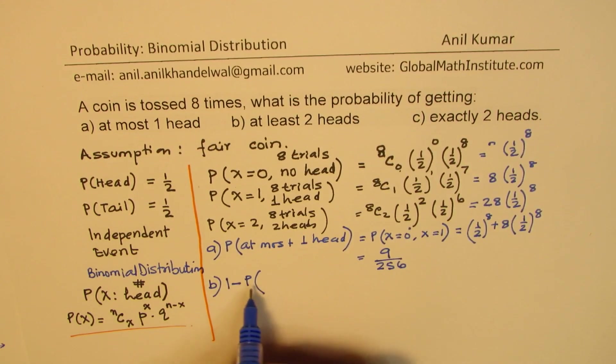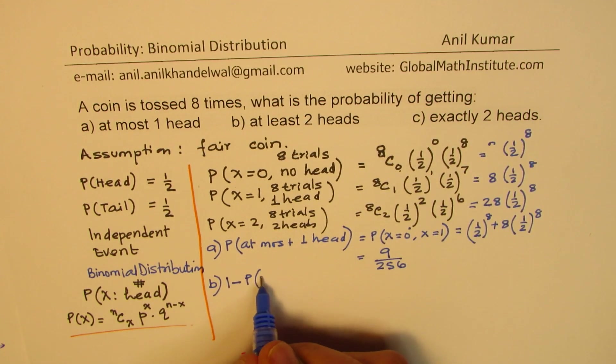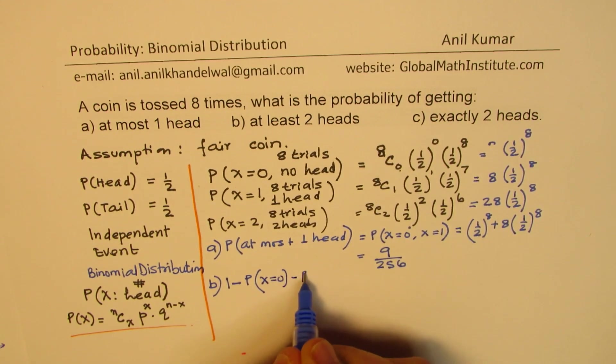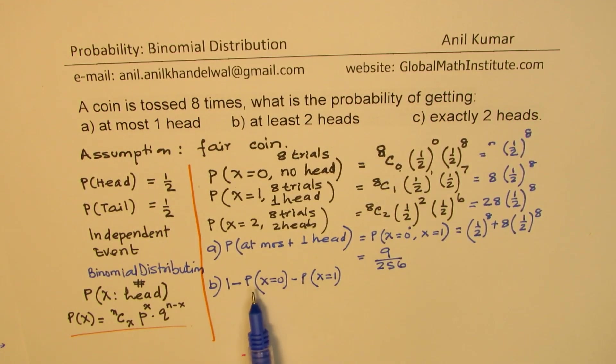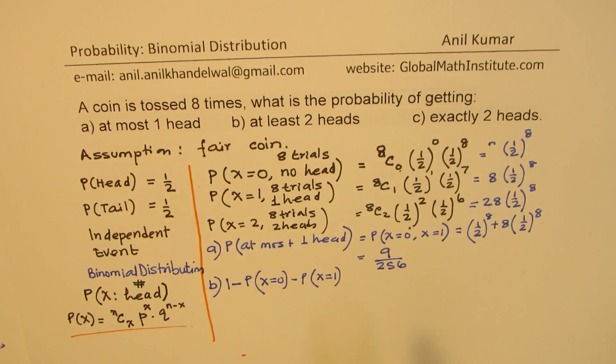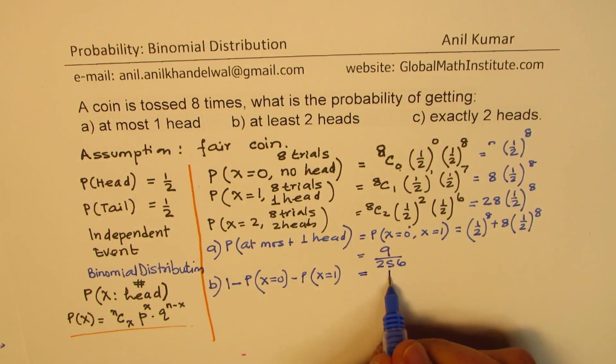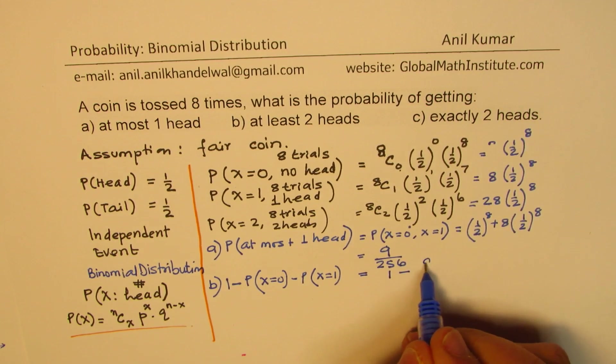So probability of, let me write minus probability of getting no heads when X equals to zero minus probability when X is equal to one. So those probabilities we have to take away. To get part B, at least two heads. So we get either two heads or three heads, four heads, five, six, seven, or eight heads. But we will exclude the probability of getting one head and no heads. So we'll exclude this part.